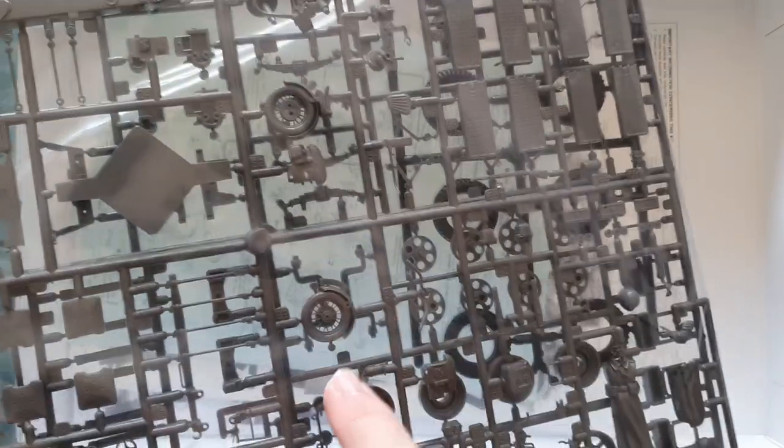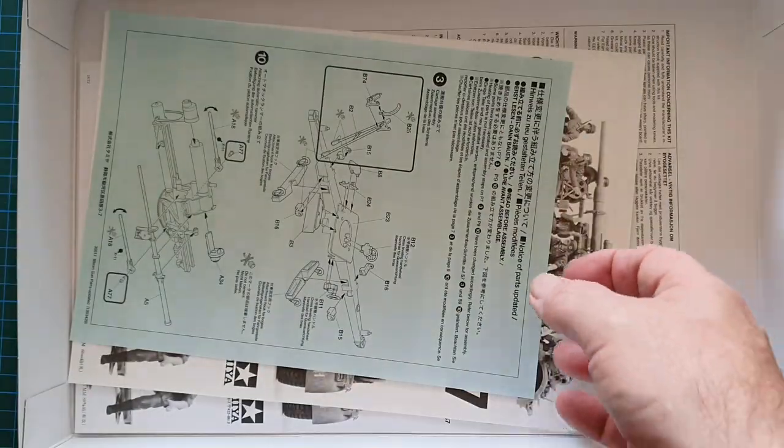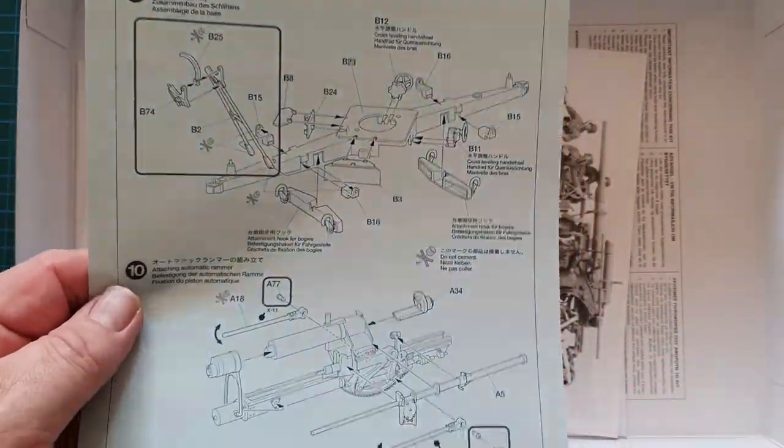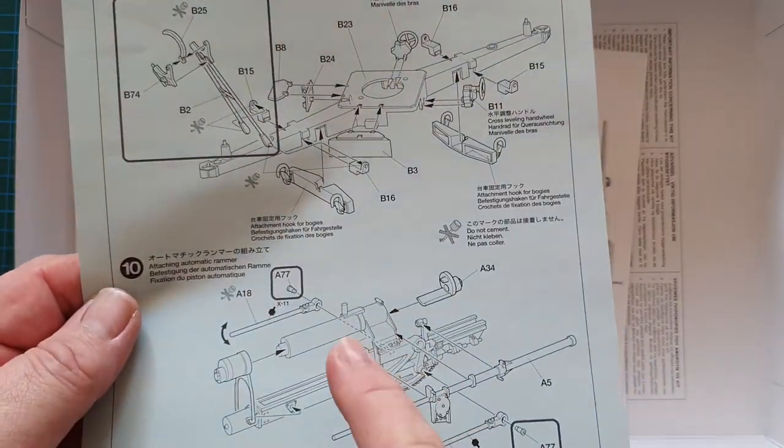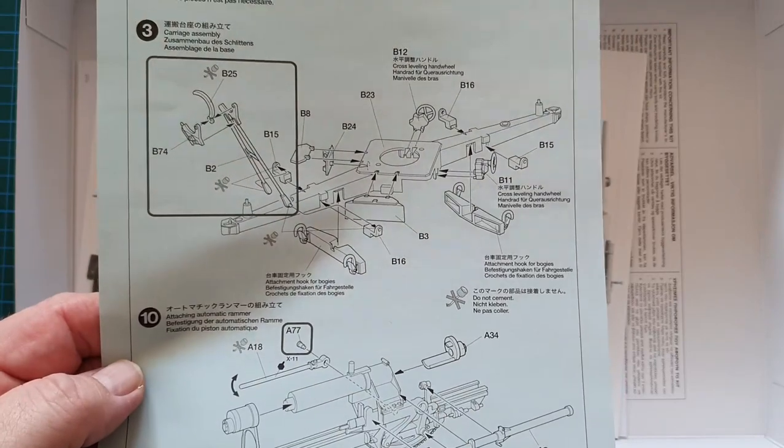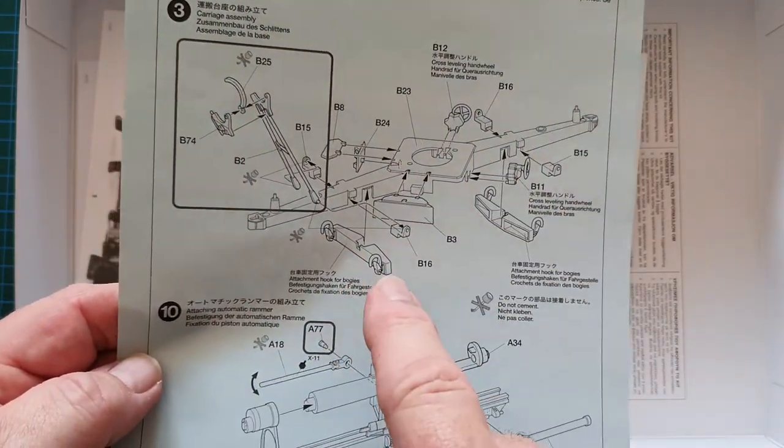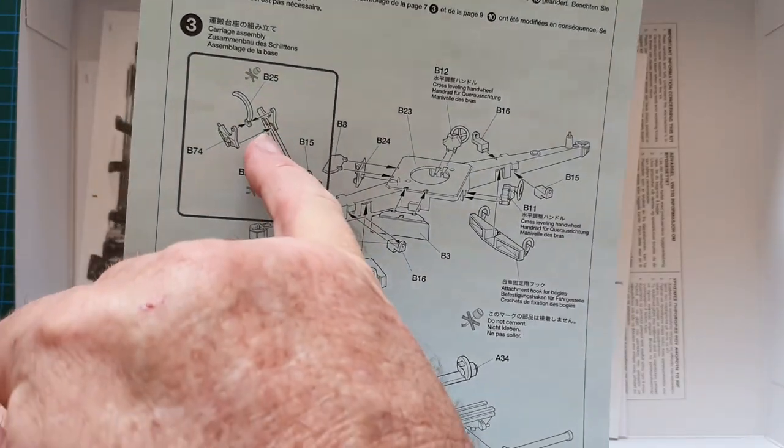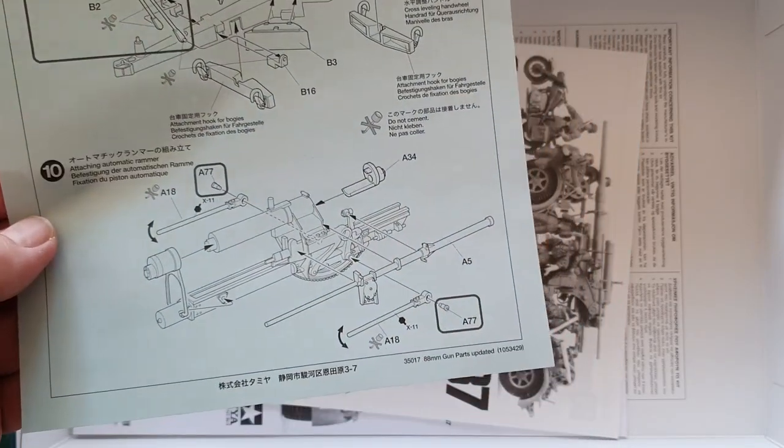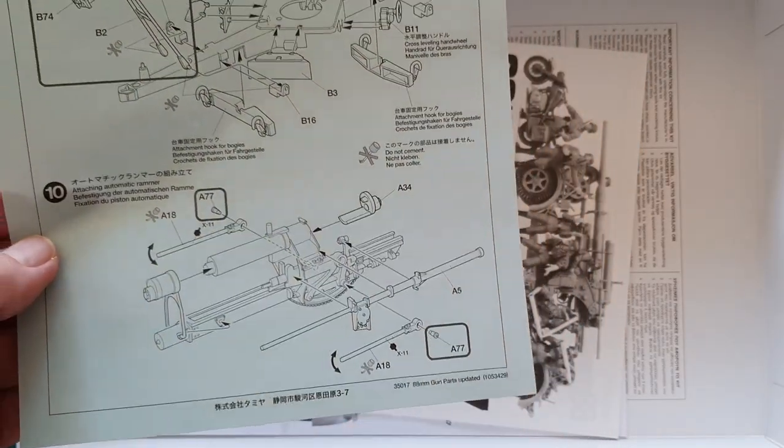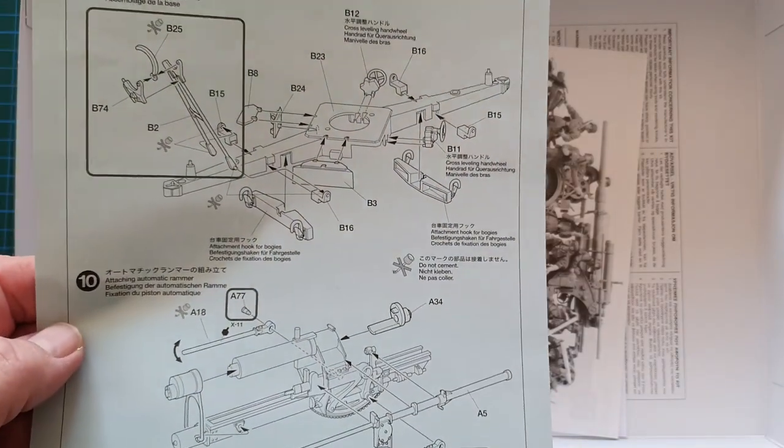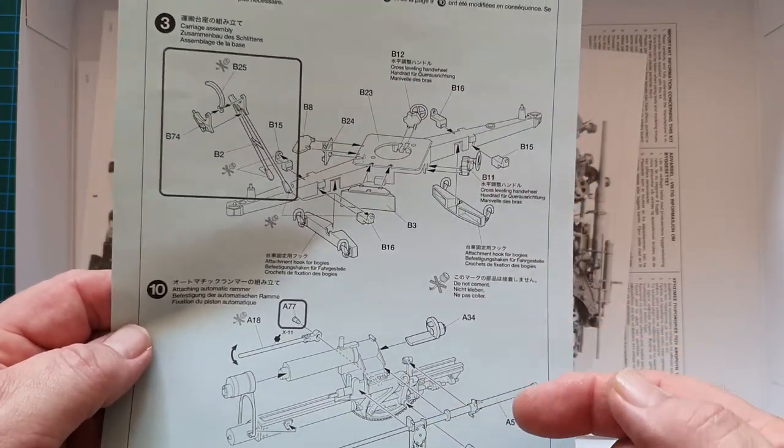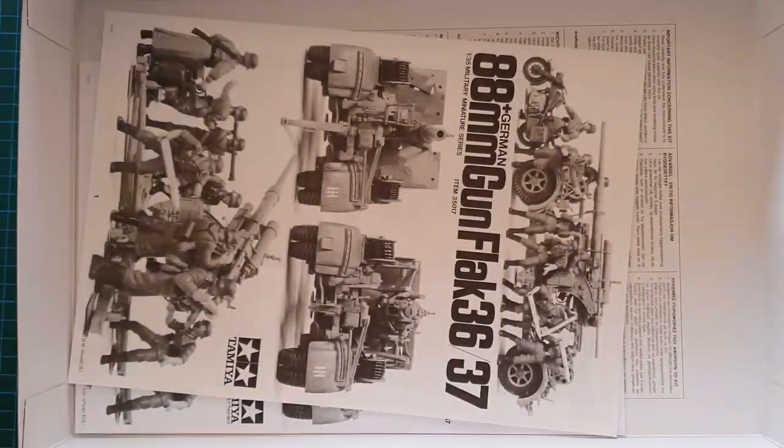This is a correction sheet for part 10 and part 3. This correction is, basically back in the original days you melted the pin here with a hot screwdriver. Can't do that nowadays, too many people hurt themselves, so they've just corrected and updated the parts so you don't have to do that and thrown the correction sheet in.